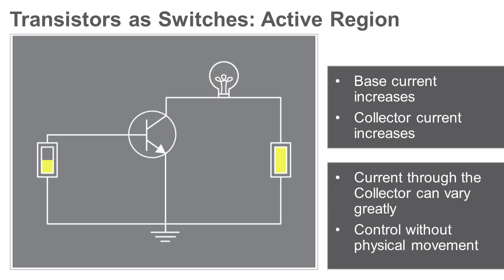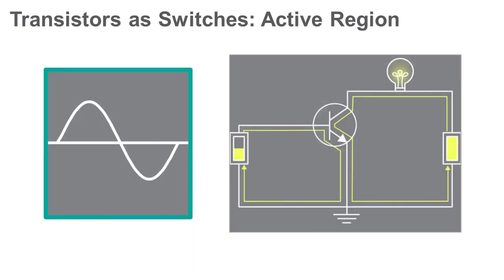When this happens, the transistor is operating as an amplifier. When we use a transistor as an amplifier, the transistor is operating in its active region.